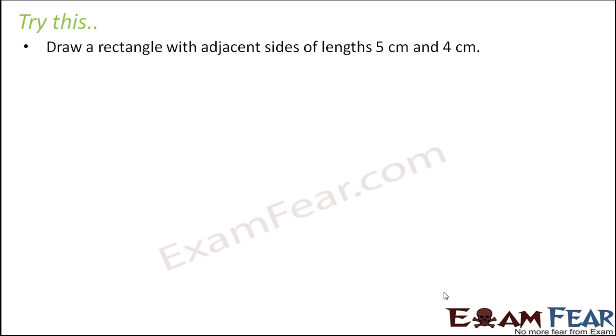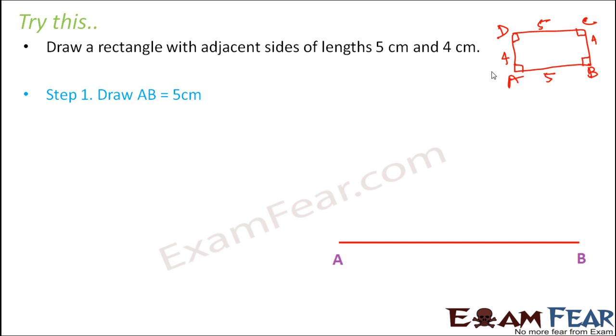So let us look at the last problem where we are asked to draw a rectangle with adjacent sides of lengths 5 cm and 4 cm. Now this is pretty simple because we know let's first draw a rectangle. So we know that in a rectangle all the angles are equal to 90 degrees. So if we say that ABCD is a rectangle if we know AB has 5 cm and BC has 4 cm again the opposite sides are equal. So this is also 5 this is also 4. So knowing so much of detail it's pretty simple to draw the rectangle.